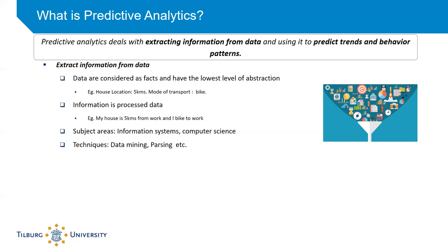So in the same example, information could be something like this: my house is five kilometers from work and I bike to work. Notice that I've added two contexts — one is myself and the second is work. The subject areas involved in extracting information from data are information systems, computer science, and others.